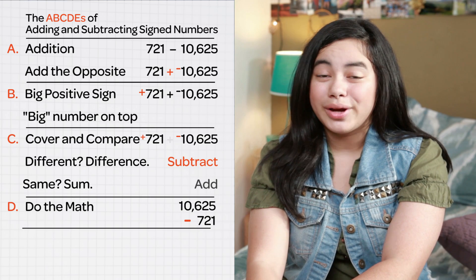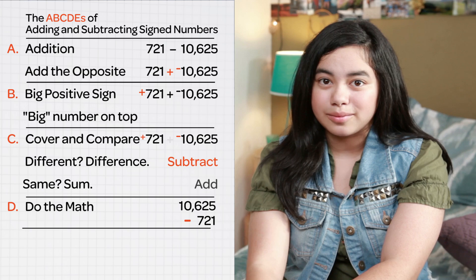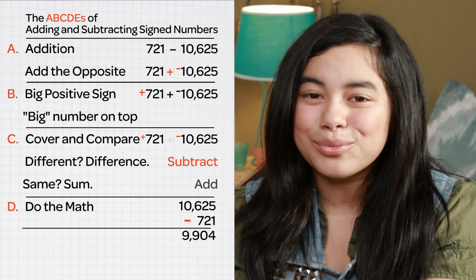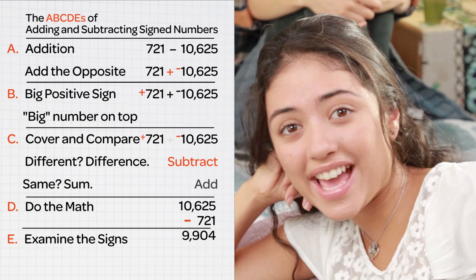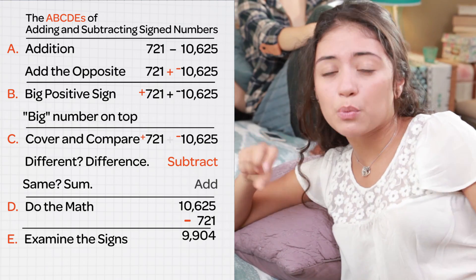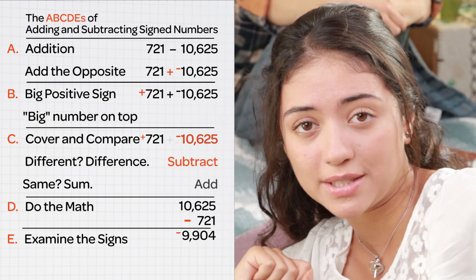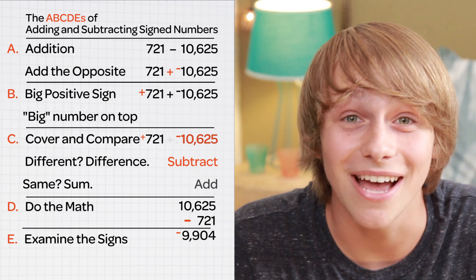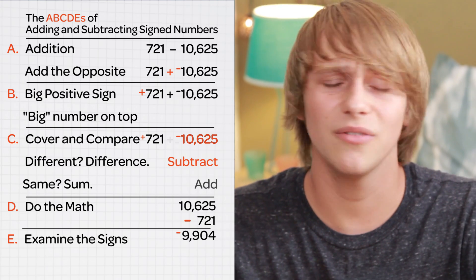D — Do the math. We add or subtract depending on what we saw in C. Doing the math will get us a number, but that number is not the answer yet. E — Examine the signs and choose the sign with the bigger number. If both numbers have the same sign, then it makes it easier. So that's A, B, C, D, E — and you use them in your time of need.